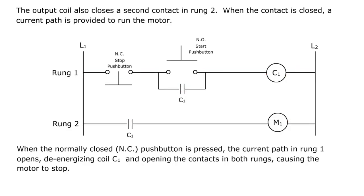When the normally closed pushbutton is pressed, the current path in rung 1 opens, de-energizing coil 1 and opening the contacts in both rungs, causing the motor to stop.